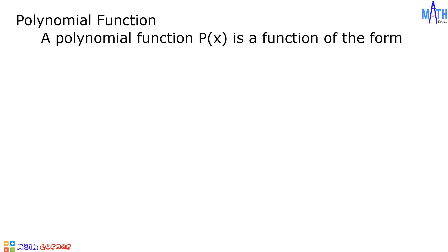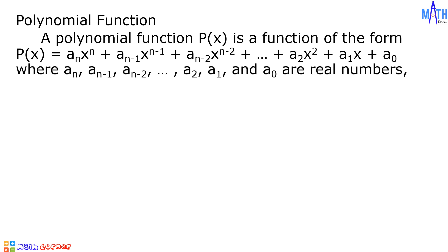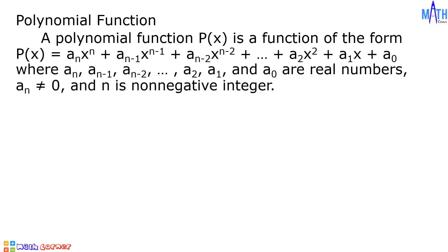A polynomial function P of X is a function of the form P of X equals A sub N times X raised to N plus A sub N minus 1 times X raised to N minus 1 plus A sub N minus 2 times X raised to N minus 2, up to A sub 2 X squared plus A sub 1 X plus A sub 0, where A sub N, A sub N minus 1, A sub N minus 2, up to A sub 2, A sub 1, and A sub 0 are real numbers. A sub N is not equal to 0, and N is a non-negative integer.